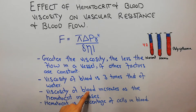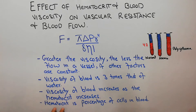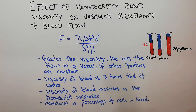The main factor that increases the viscosity of blood is hematocrit. Viscosity of blood increases as the hematocrit increases, so the most important factor for increasing or decreasing the viscosity of blood is hematocrit. Hematocrit is the percentage of cells in the blood.